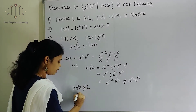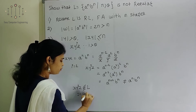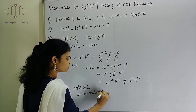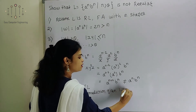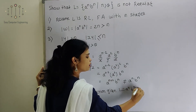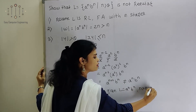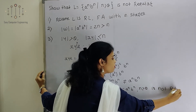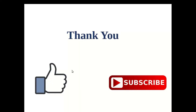By contradiction, we have proved that the given language L = {A^N B^N | N > 0} is not a regular language. In this way we can prove it using the Pumping Lemma. Thank you. If you like this video, click the like button, subscribe to the channel, and click the bell button to get notifications of new videos.